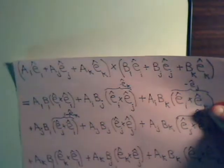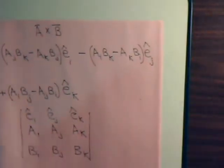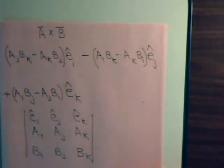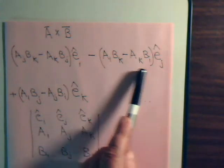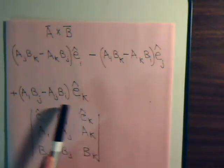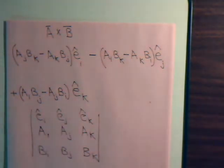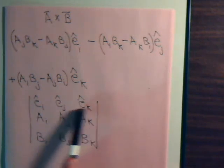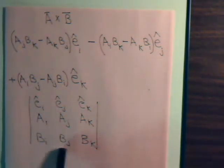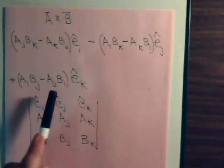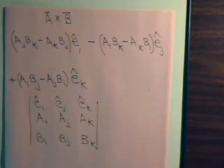So when we consider it like that and collect the terms, this is the expression that we end up with. And then if we write this in determinant form and go ahead and evaluate that determinant, it gives us that same expression. That's how the cross product formula is derived.